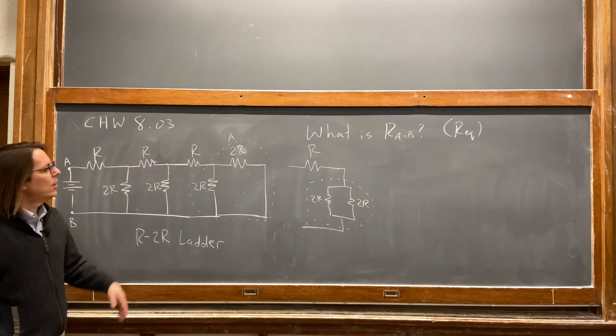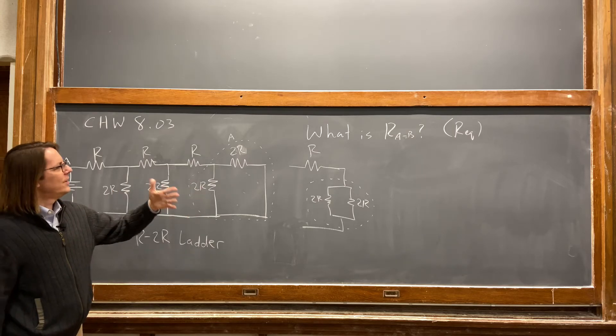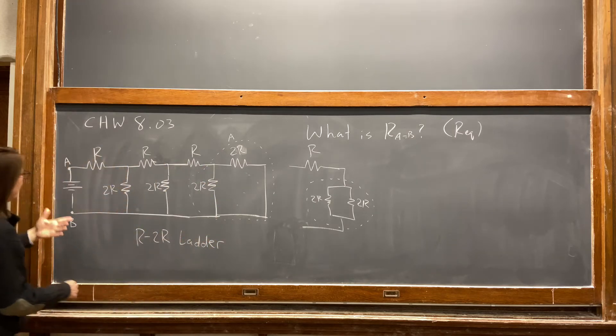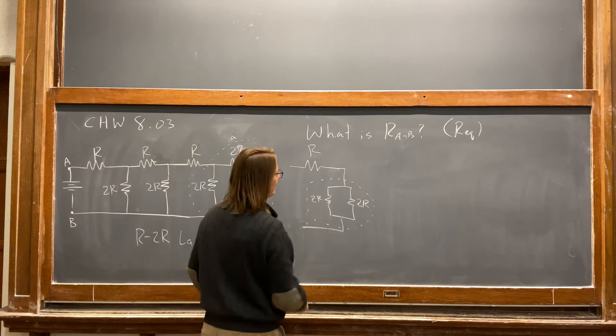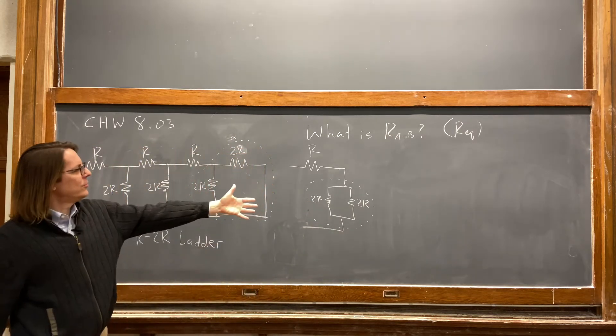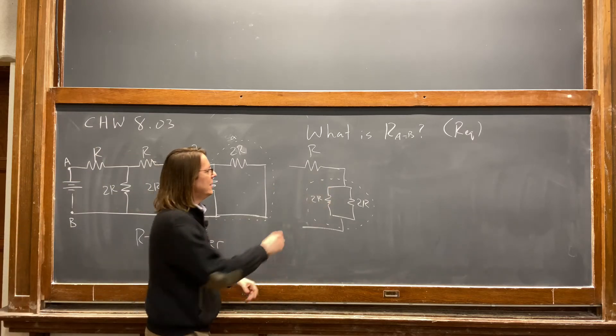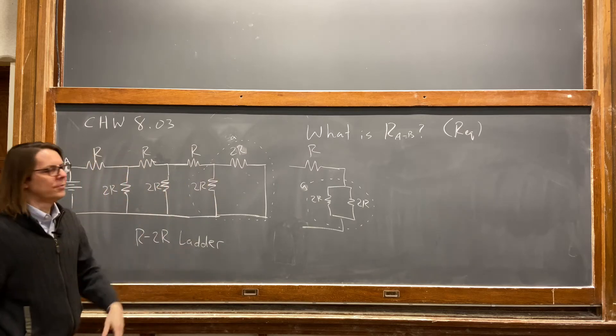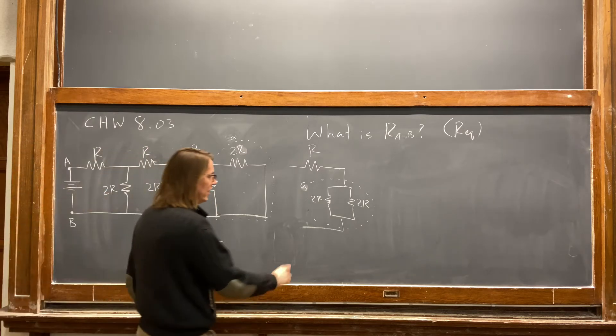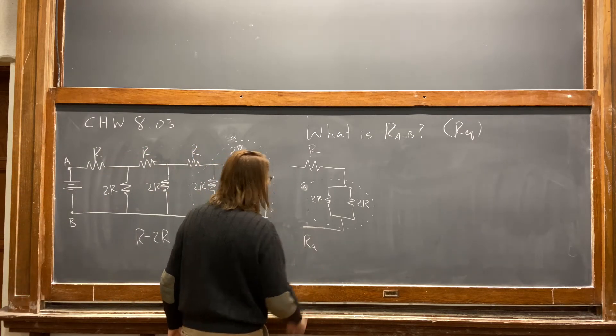So you want to figure out what is the resistance of this branch, and A is a very unfortunate choice of letter because I already used big A for something. So you want to figure out what is the resistance of this branch, little A, and then just realize it's in series with R. So what is the resistance of the branch A?